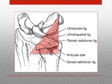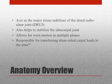Here is a picture of the TFCC. You can see how it gets its name. This acts as the major tissue stabilizer of the distal radial ulnar joint, or the DRUJ, as we'll call it for short. It also helps to stabilize the ulnocarpal joint and allows for wrist motion in multiple planes.